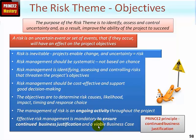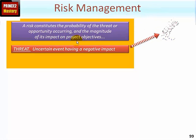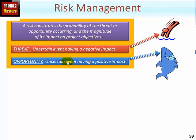Since risks potentially affect the project's objectives, without effective risk management you can never be certain the project will meet those objectives and hence maintain a viable business case. A risk constitutes the probability of a threat or an opportunity occurring and the magnitude of its impact on the project objectives. A negative threat is an uncertain event which if it occurred would have a negative impact on one or more objectives; an opportunity is uncertain but would have a positive impact. Effective risk management seeks to minimize threats and maximize opportunities.